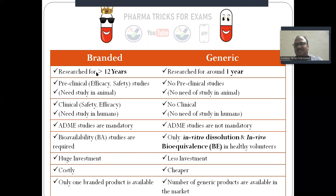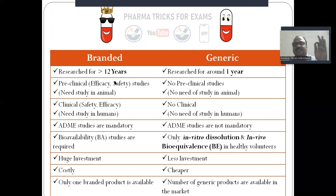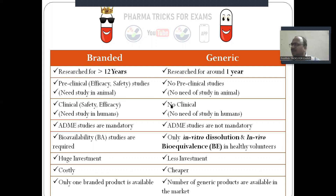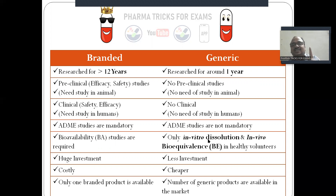Why is the branded drug costly? Because they did long-term research over many years. For the branded drug, pre-clinical studies in animals are compulsory — safety and efficacy must be established in animals before humans — and full clinical studies in humans are also compulsory, including ADME (absorption, distribution, metabolism, and excretion). For a generic drug, pre-clinical and clinical studies are not mandatory; only bioavailability and bioequivalence studies are compulsory.